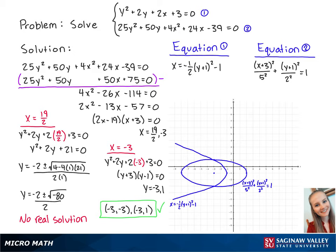Now we can see our solution points at (-3, -3) and (-3, 1). And this completes the problem.